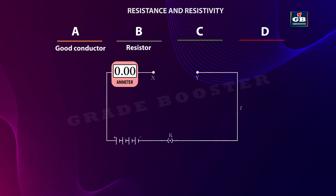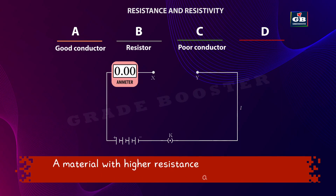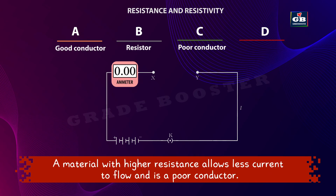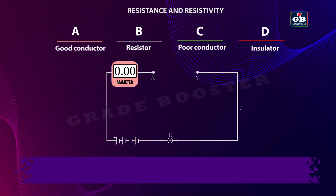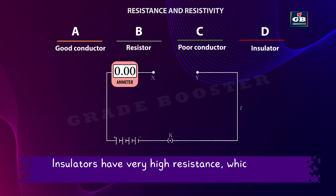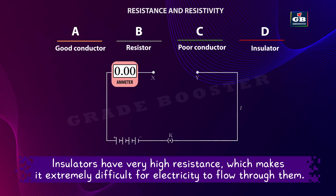Next, wire C — we can call wire C a poor conductor. A material with higher resistance that allows less current to flow is called a poor conductor. And wire D is an insulator. Insulators have very high resistance, which makes it extremely difficult for electricity to flow through them.